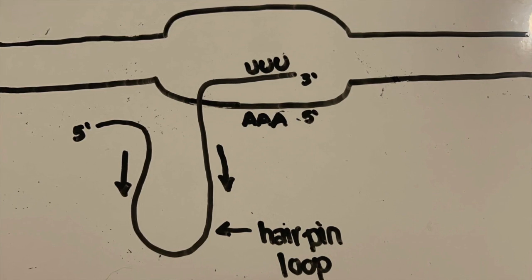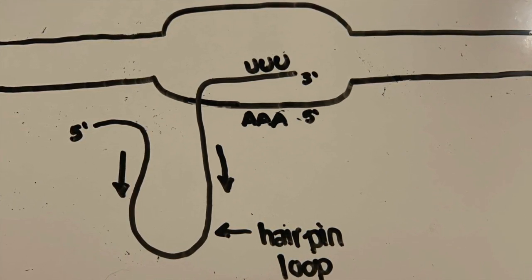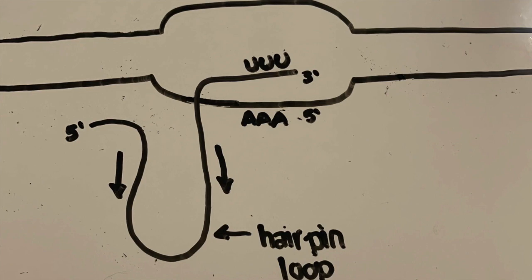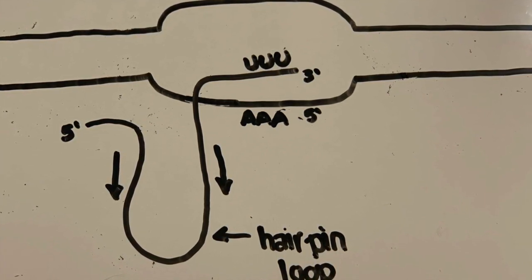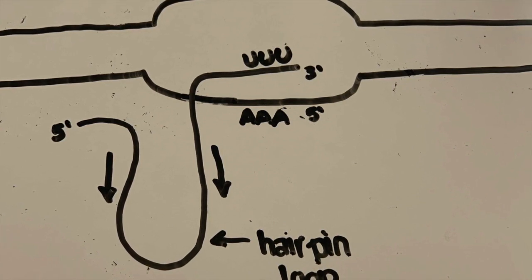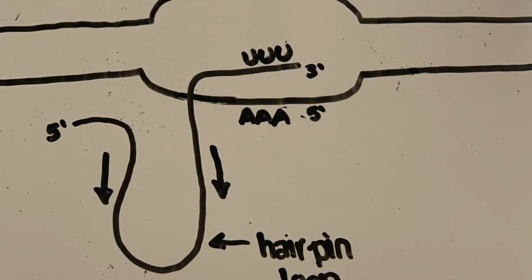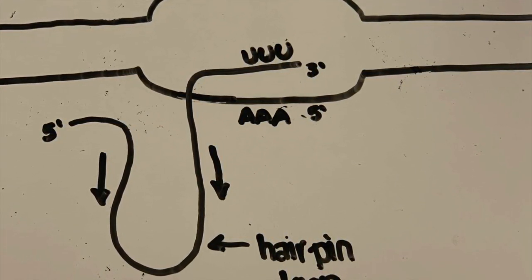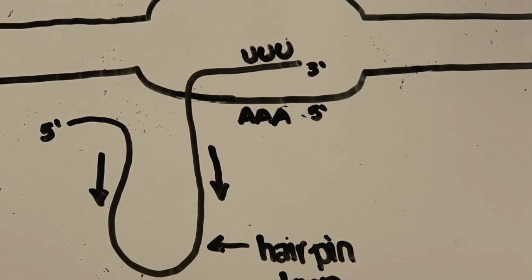To go more in-depth, when nearing termination an inverted repeat occurs. This is called rho-independent termination, and a hairpin loop is formed. This hairpin loop causes RNA polymerase to pause. There is a poly-U tail at the end where nucleotides code for uracils, helping to destabilize the RNA-DNA hybrid, therefore ending transcription.